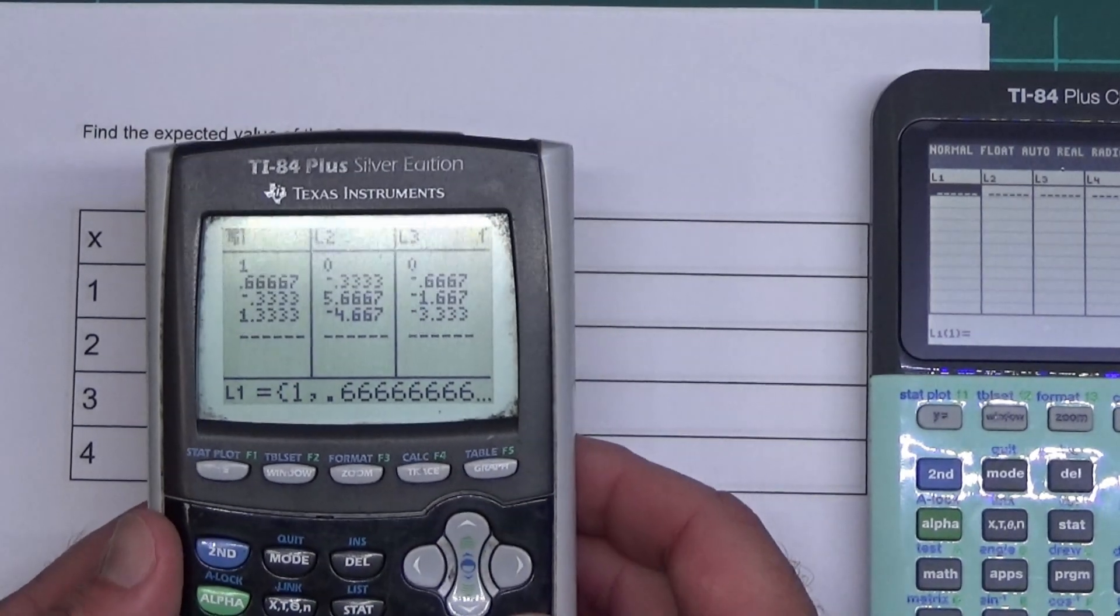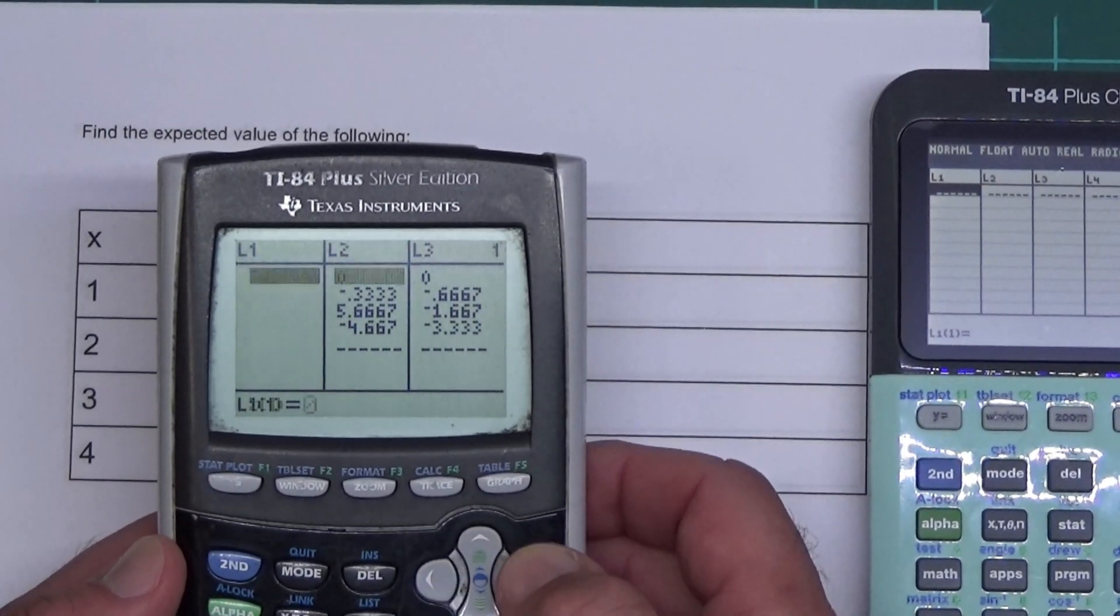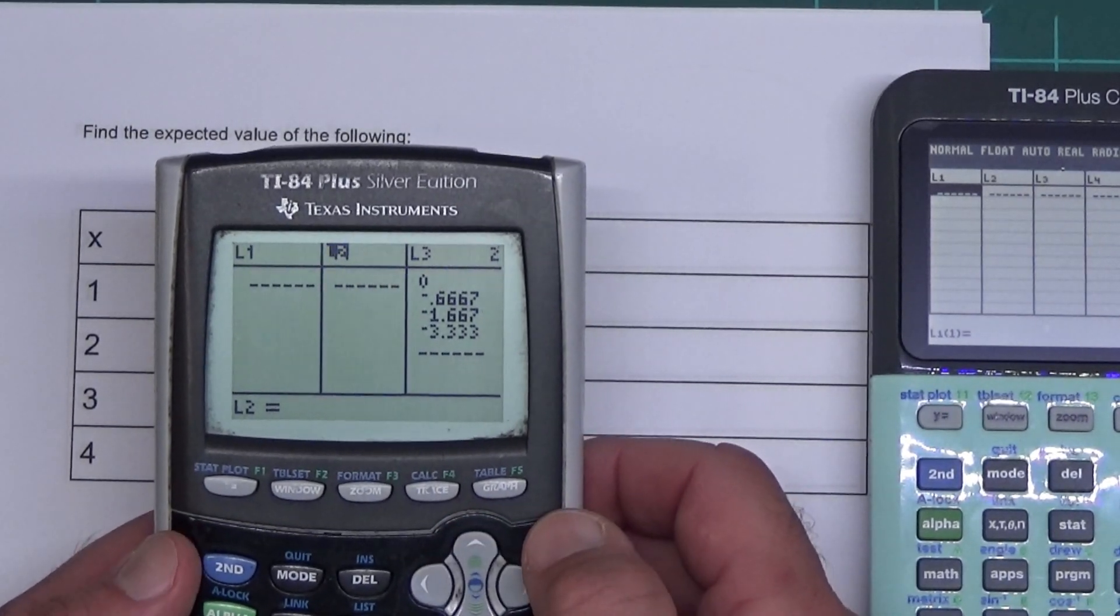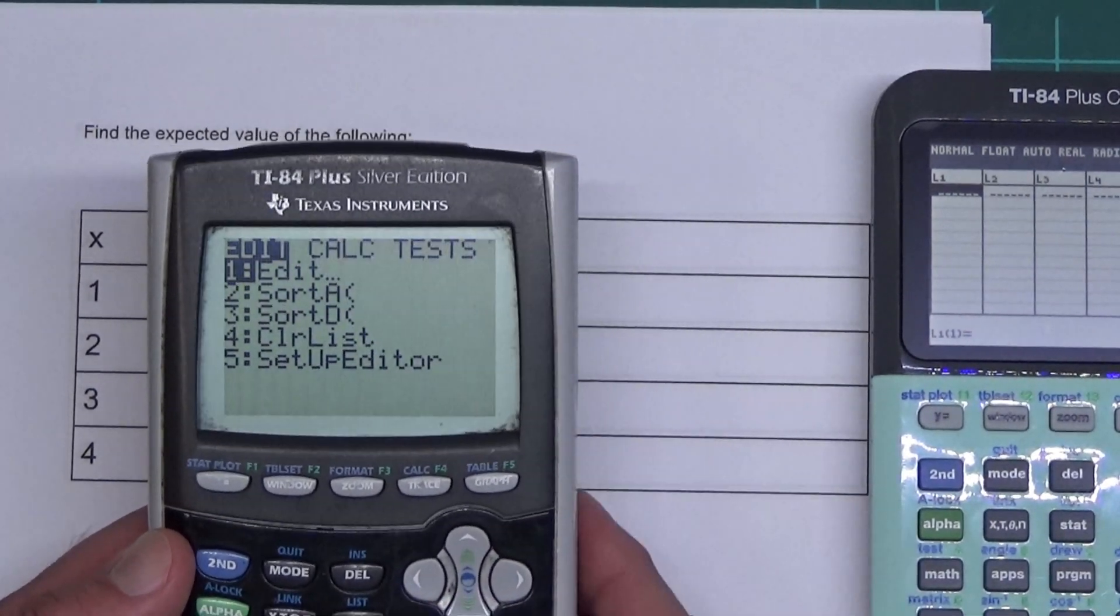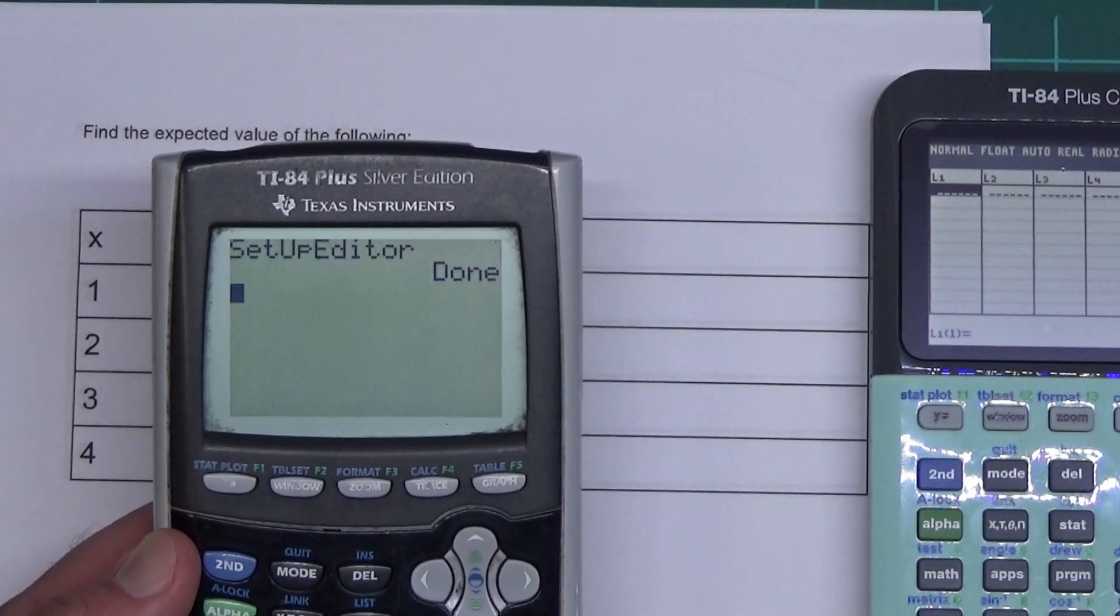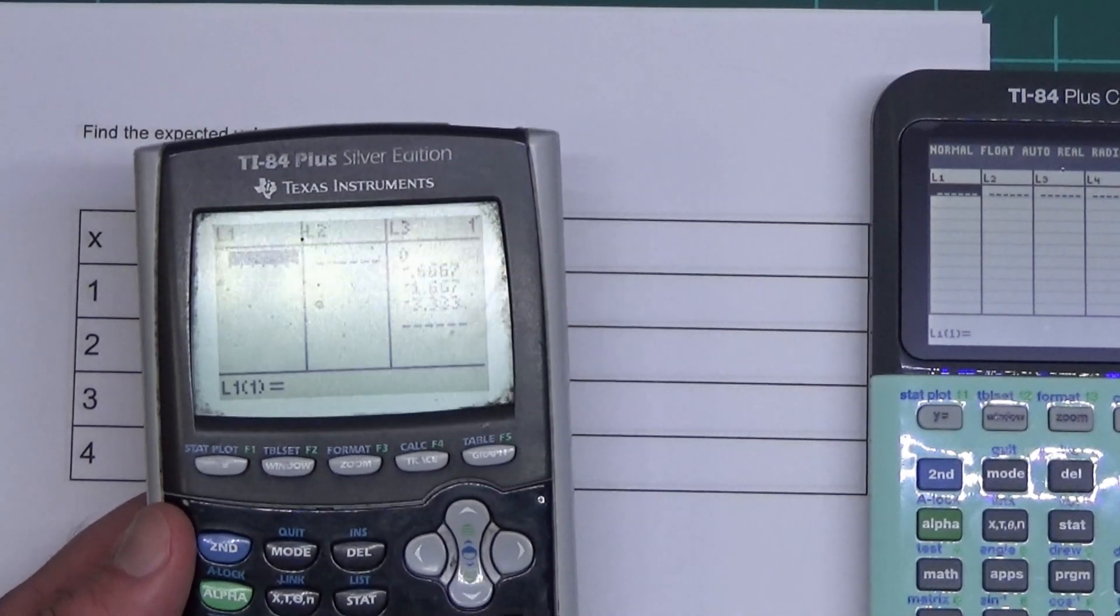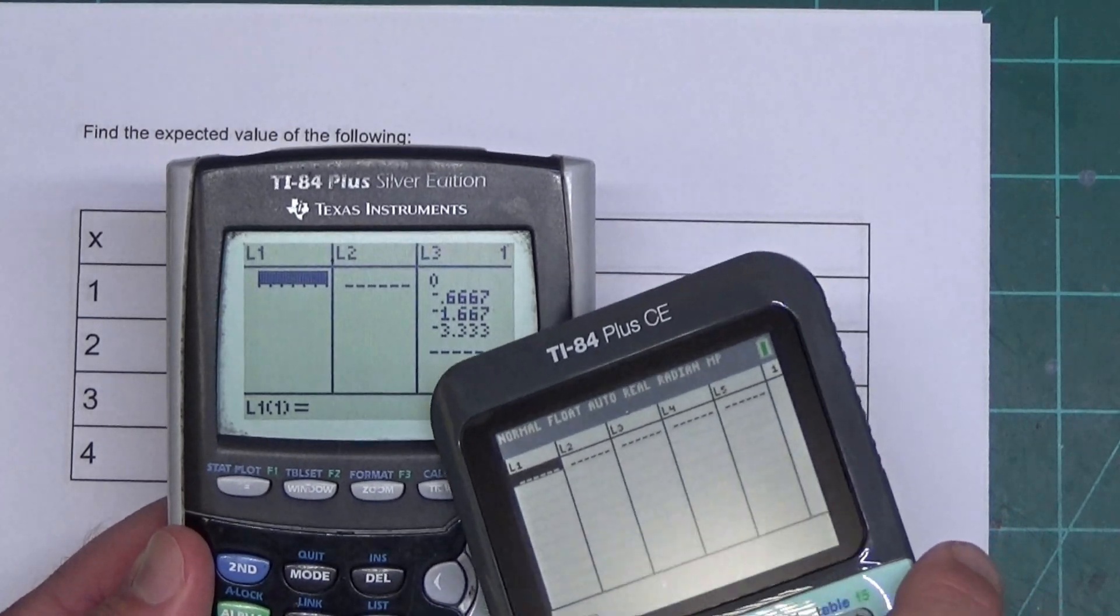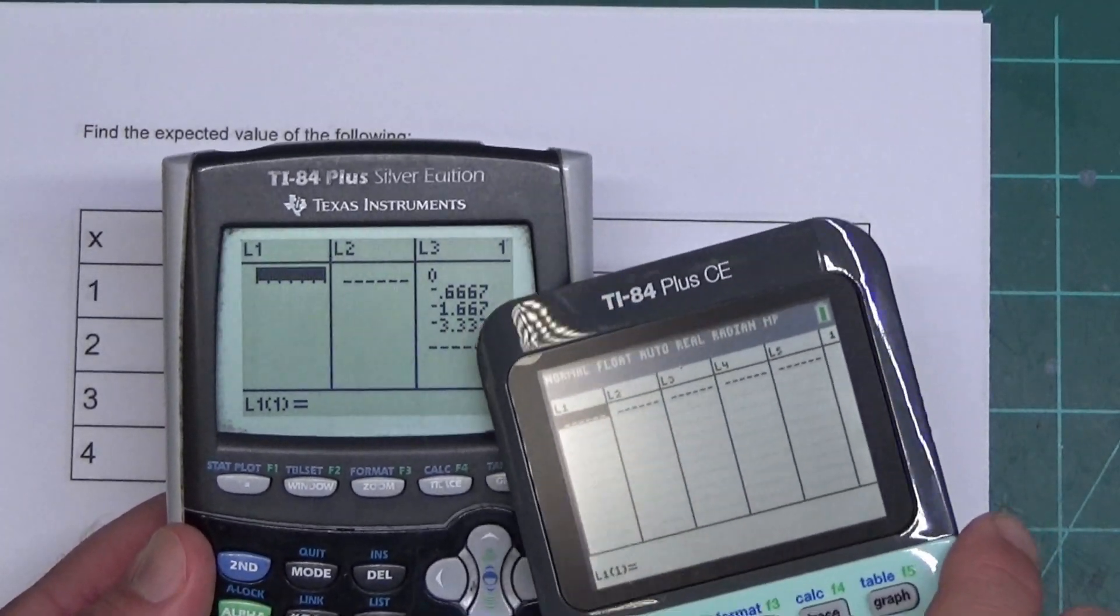To clear them, you put the cursor up the top. On the L1, you hit Clear and Down. Same thing on L2, you hit Clear and Down. You don't want to Delete because if you press Delete, you delete the L2. To get it back, you press STAT, go down to number five, SetUpEditor, press Enter twice, and now when you press STAT and hit Enter, it's back. You can put them back pretty simply. I'm going to use this one because of the bigger screen. It's going to show up a little bit better on video.